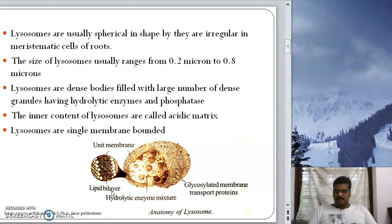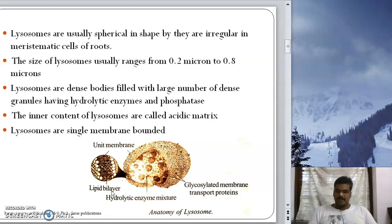Lysosomes are dense, granular bodies surrounded by a membrane, and the membrane is filled with enzymes. The dense particles present within lysosomes are hydrolytic enzymes, such as phosphatases. The inner content of a lysosome is called the acid matrix. Lysosomes are single membrane-bounded structures, and their inner matrix is composed of hydrolytic enzymes.